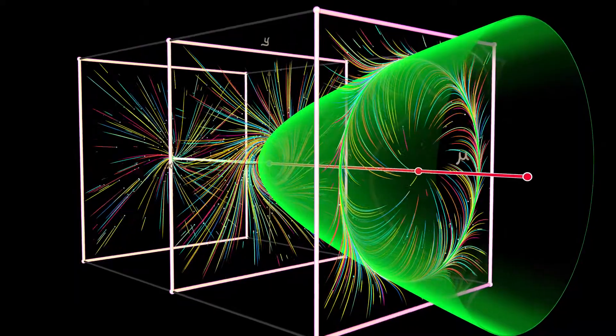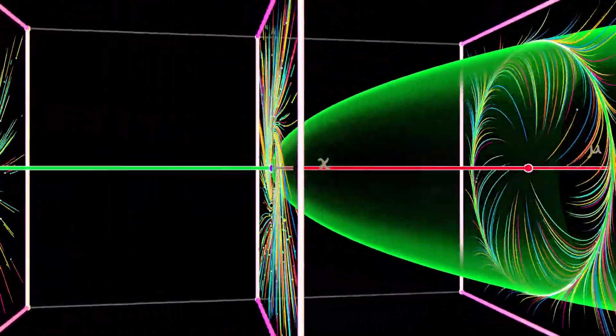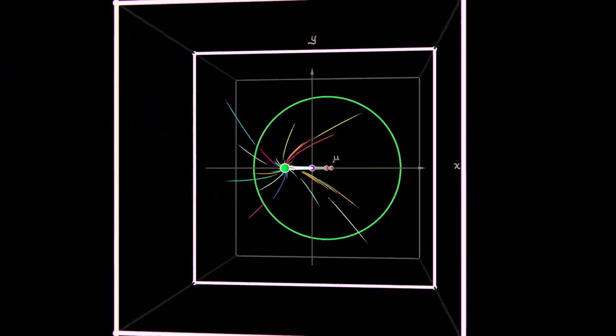Now, you slice it at any value of mu, and it gives you a circle, that stable limit cycle. But seeing the full picture in 3D, very helpful.